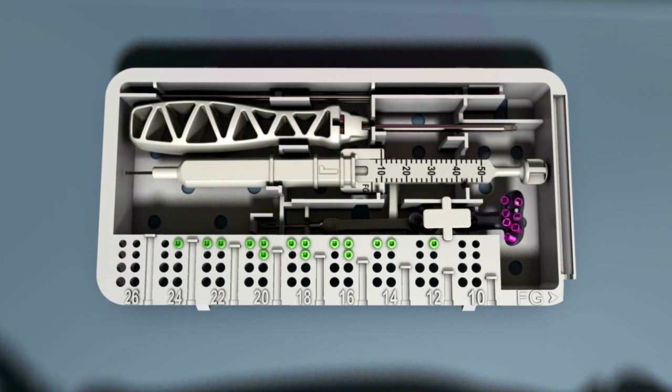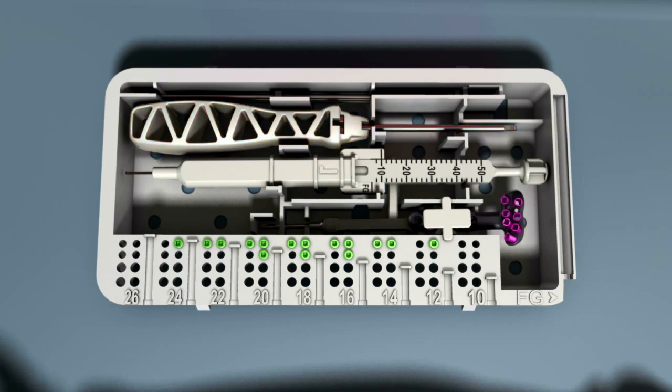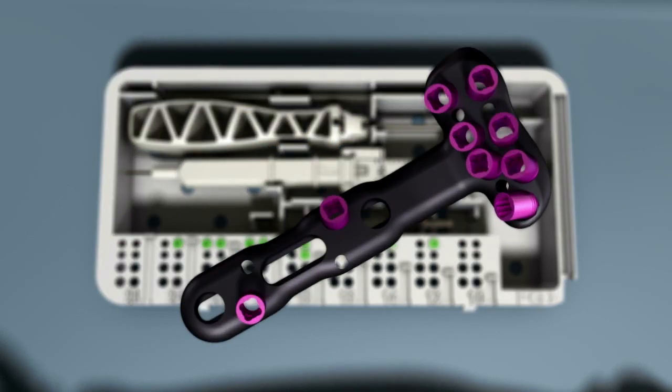Each pack contains a DVR cross-lock plate, locking screws, K wires, soft tissue guide, drill bit, depth gauge, and screwdriver. Remove the holding clip to release the DVR cross-lock plate from the tray.